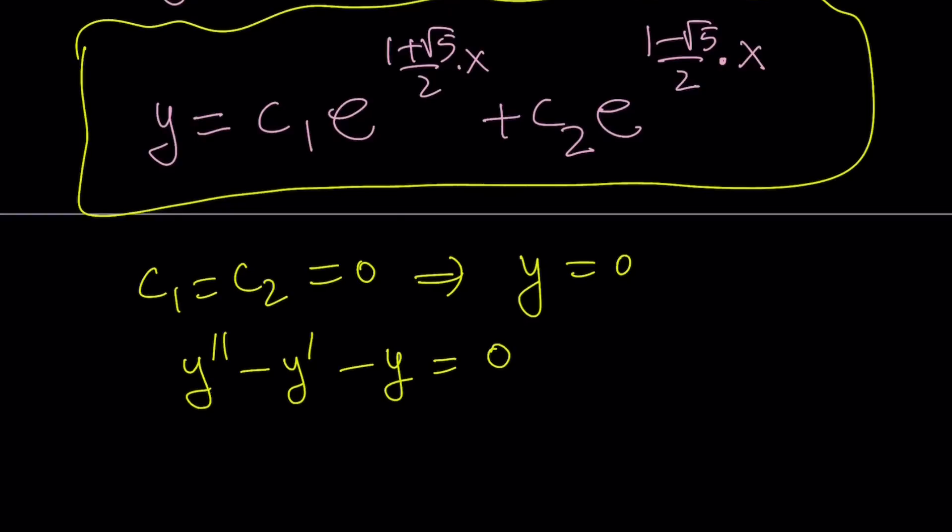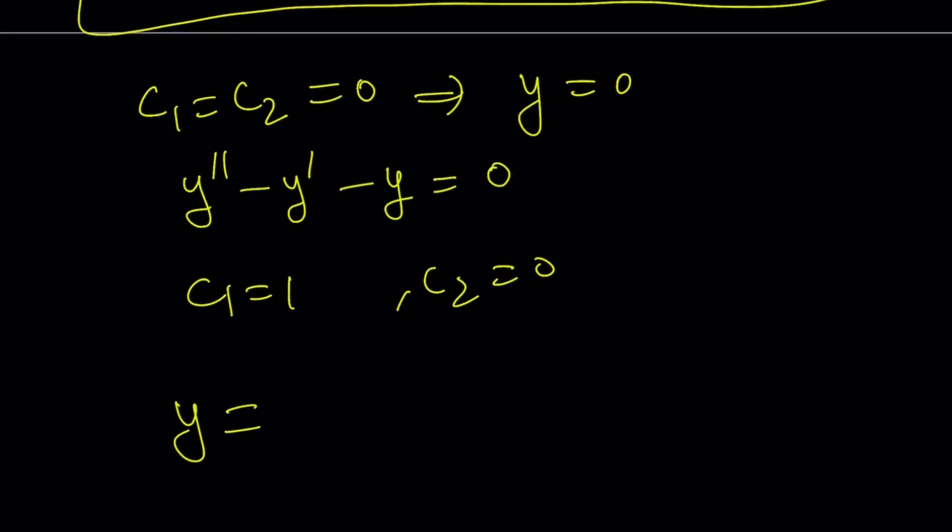So, y equals 0 definitely satisfies, but that's just one of the solutions. If you replace c1 and c2 with certain numbers, you're going to notice that you'll be getting some solutions. For example, take c1 equals 1. Let's go ahead and take a look at this case. c1 is 1 and c2 is 0, and that gives us y equals e to the power 1 plus root 5 over 2 times x.